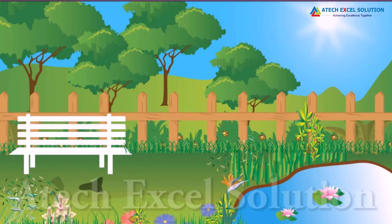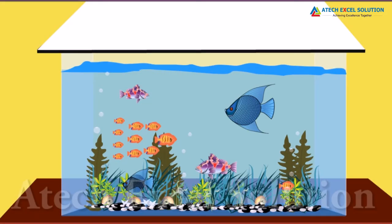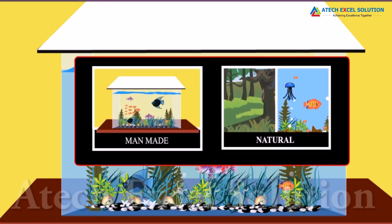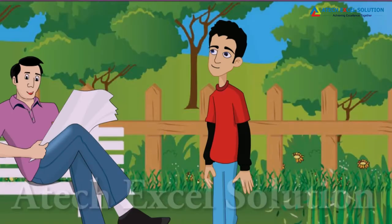Correct. This is the ecosystem of the garden. An ecosystem means a complete system including all members of the system. A garden is a man-made ecosystem. Can you think of more such man-made ecosystems? An aquarium? Correct. There are two types of ecosystems: man-made and natural ecosystems.